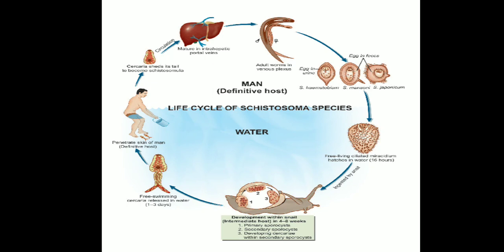The eggs start appearing in urine usually around 10 to 12 weeks after cercarial penetration. The adult worms may live for up to 20 to 30 years. That covers the morphology and life cycle of Schistosoma haematobium. The next part of the video will cover pathogenesis and laboratory diagnosis.